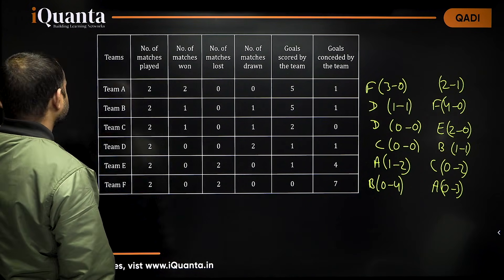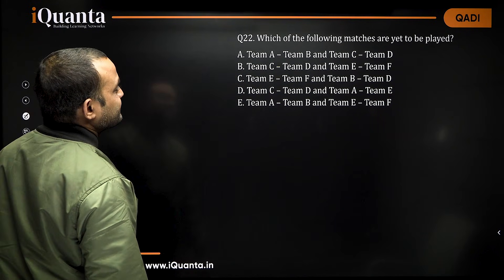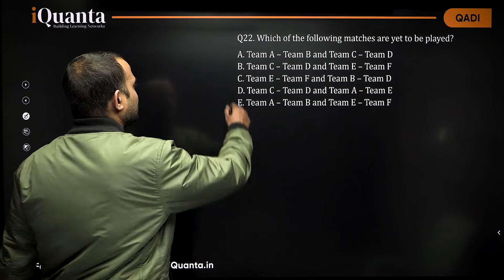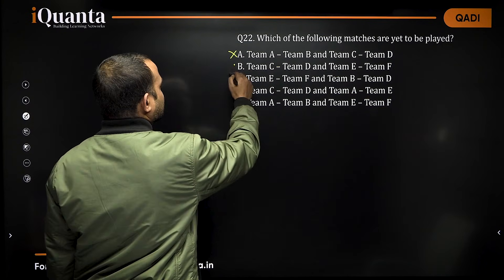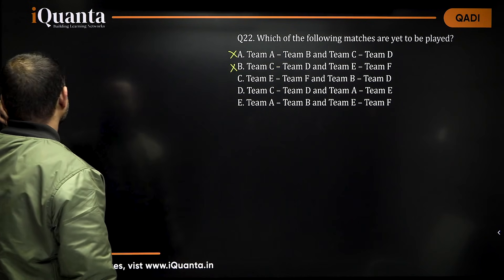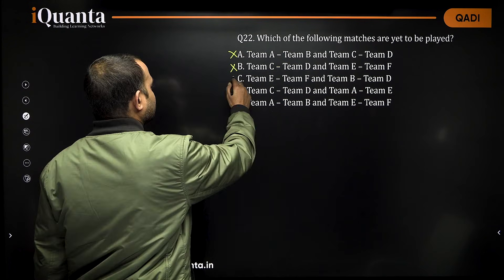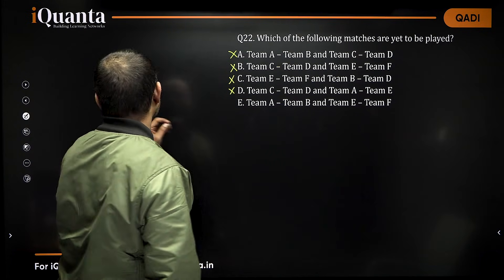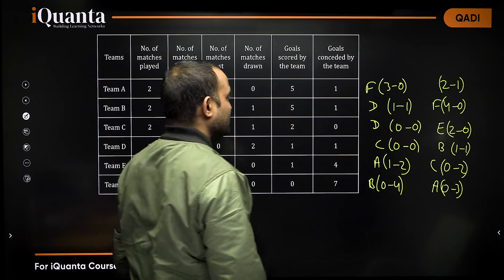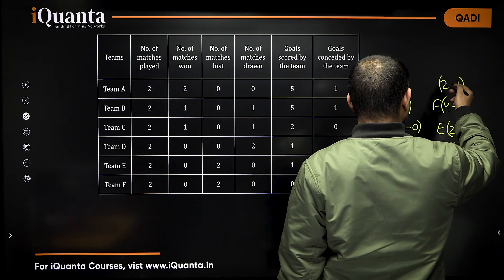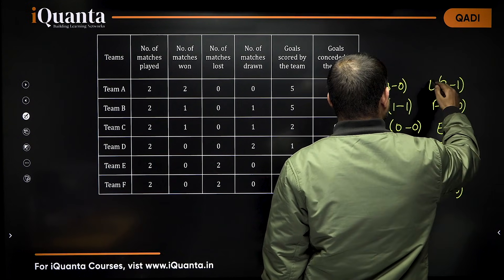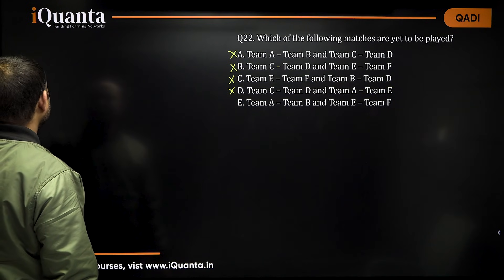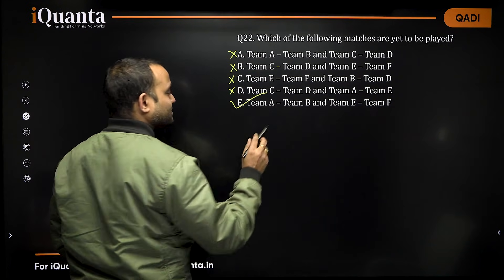Let us go to the questions. Which of the following matches are yet to be played? C versus D was drawn — not possible. B versus D was also drawn — not possible. Again C versus D is not possible. Team A versus B was not played, as well as team E versus F was not played. So the answer is option E.